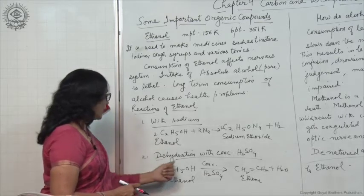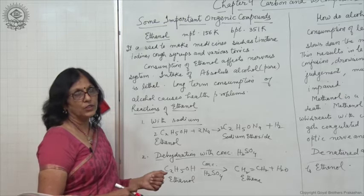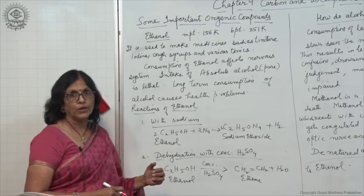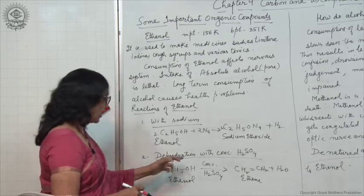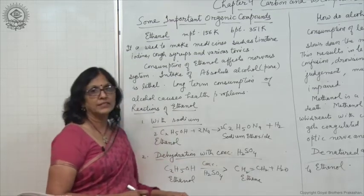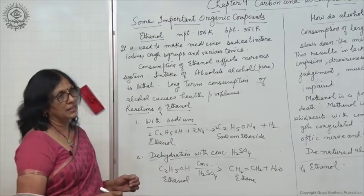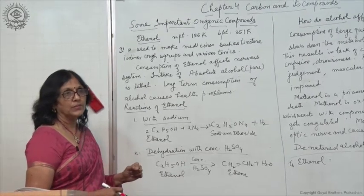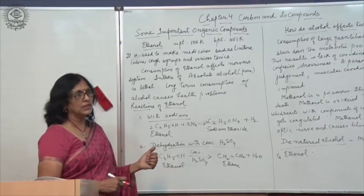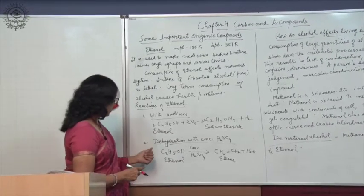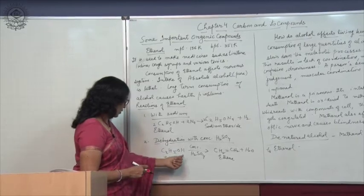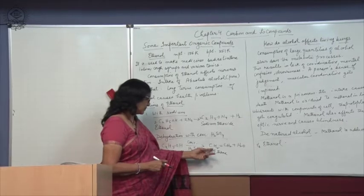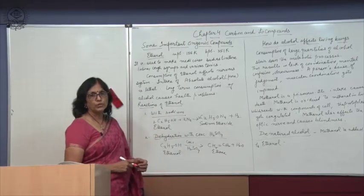On heating with concentrated sulphuric acid, ethanol forms ethene by the loss of one water molecule. Concentrated sulphuric acid acts as a dehydrating agent. It removes one water molecule from ethanol and the process is called dehydration.